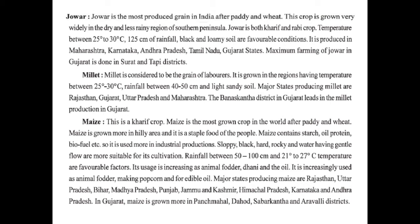Millet is considered to be the grain of labourers. It is grown in regions having temperature between 25 to 30 degree Celsius, rainfall between 40 to 50 cm, and light sandy soil. Major states producing millets are Rajasthan, Gujarat, Uttar Pradesh, and Maharashtra. The Banaskantha district in Gujarat leads in millet production.